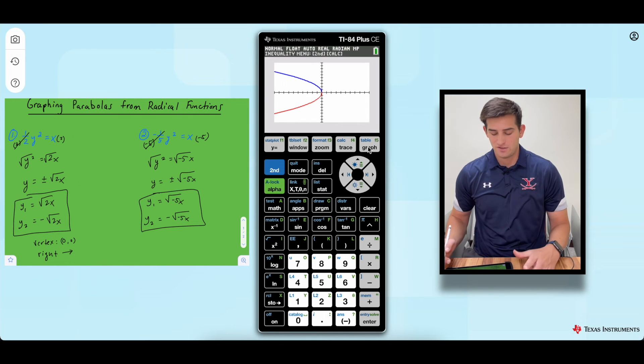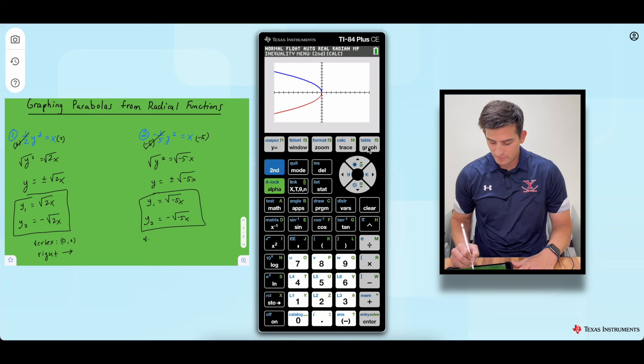And once again, there's our parabola. So we can say our vertex once again is at the origin and now our parabola is opening to the left.